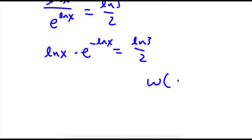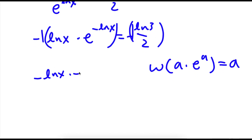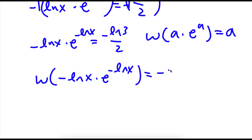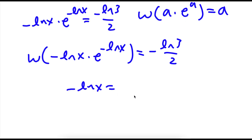Now if I take the Lambert W function of something in the form a times e to the power of a, this is simply equal to a. So first I'm going to multiply both sides by negative 1. So now I have negative ln x times e to the power of negative ln x is equal to negative ln 3 over 2. Taking the Lambert W function on both sides, where a equals negative ln x, I get negative ln x is equal to W of negative ln 3 over 2.